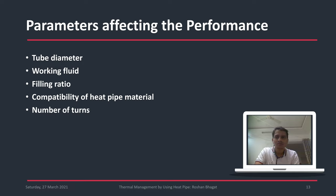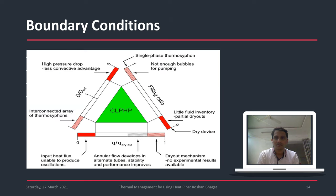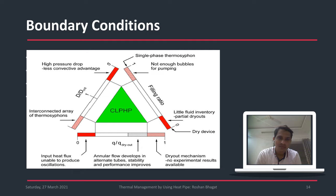The number of turns also affects the performance of a closed loop pulsating heat pipe. Compatibility of the working fluid with the heat pipe material is another parameter — some fluids are compatible with copper, some with stainless steel, and some with aluminum. The tube diameter is critical: it must be within the range of 2 to 3 mm, as exceeding 3 mm means capillary action will not take place.